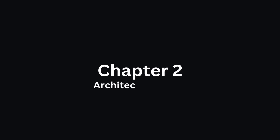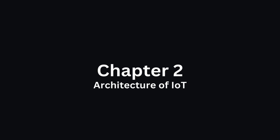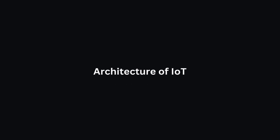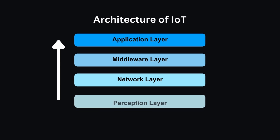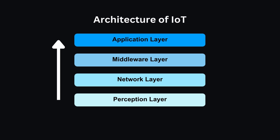Chapter 2: The Architecture of IoT. In this chapter, we are going to see the basic architecture of IoT. The architecture of IoT typically consists of four layers: the perception layer, the network layer, the middleware layer, and the application layer.